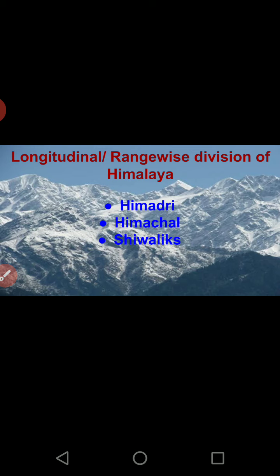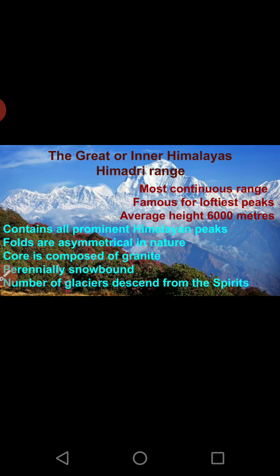This was the general features of the Himalayas. Now let us study the range-wise division, also called the longitudinal division — that is, the north-to-south division. The northernmost is Himadri, then Himachal, and the southern side is the Shivaliks. This is the longitudinal north-south division.